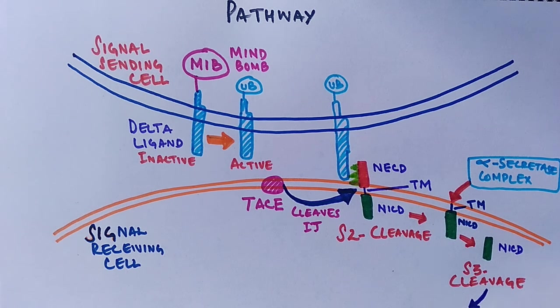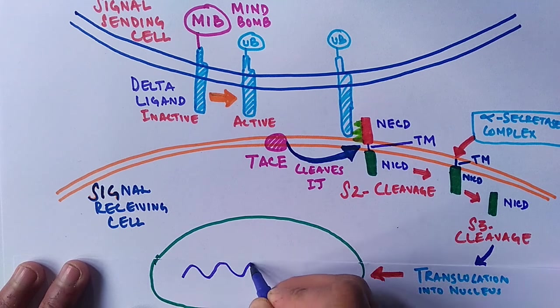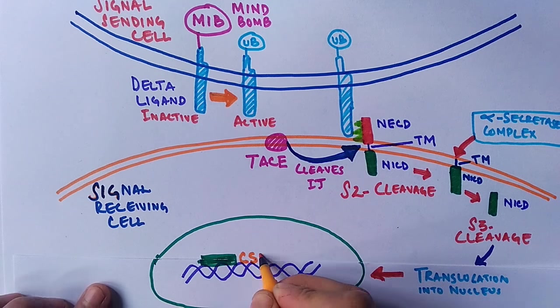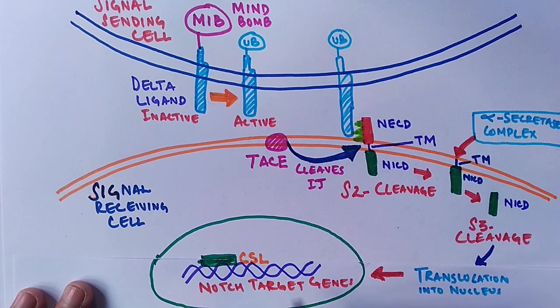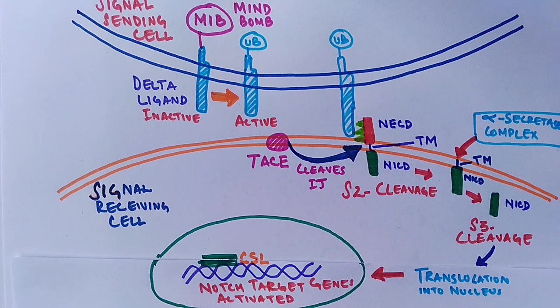This NICD is translocated to the nucleus where it forms a complex with CSL, CBFF, and different kinds of proteins, along with the mastermind protein. After making the complex with these proteins, it ultimately activates NOCH target genes, completing the signaling pathway for NOCH proteins.